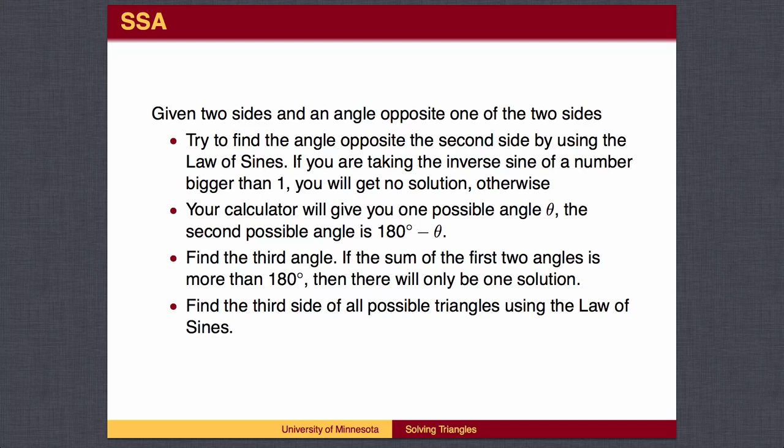Otherwise, your calculator will give you the first quadrant answer. Subtract the first quadrant angle from 180 degrees to find the second possibility. You can then find the third angle and remaining side.